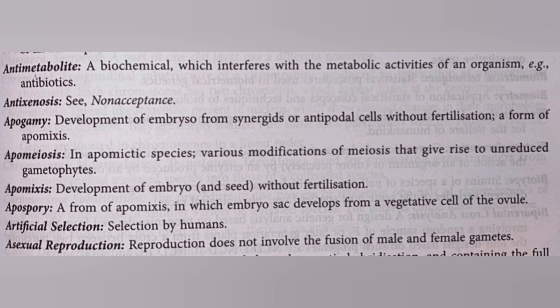Epomyxis: as we said, epigami is a form of epomyxis. So what is epomyxis? It is the development of an embryo or a seed without fertilization. The next one is epospory, another form of epomyxis, in which the embryo sac develops from the vegetative cell of the ovule, rather than from synergids and antipodal cells.